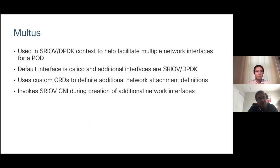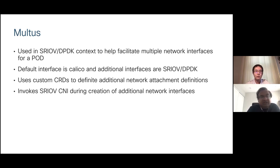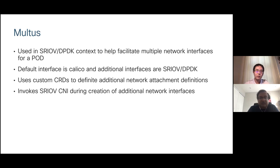On the networking side, when you have applications that need PCI passthrough or DPDK, you need SRIOV. That means a pod with more than one network interface — and that is where Multus comes in. Multus is used in the SRIOV DPDK context to help facilitate multiple network interfaces for a pod. The pod will have a default interface, which is Calico, and additional interfaces used for SRIOV or DPDK. Multus is responsible for calling the SRIOV CNI and getting the plumbing done, and it exposes a custom CRD and network attachment definitions.